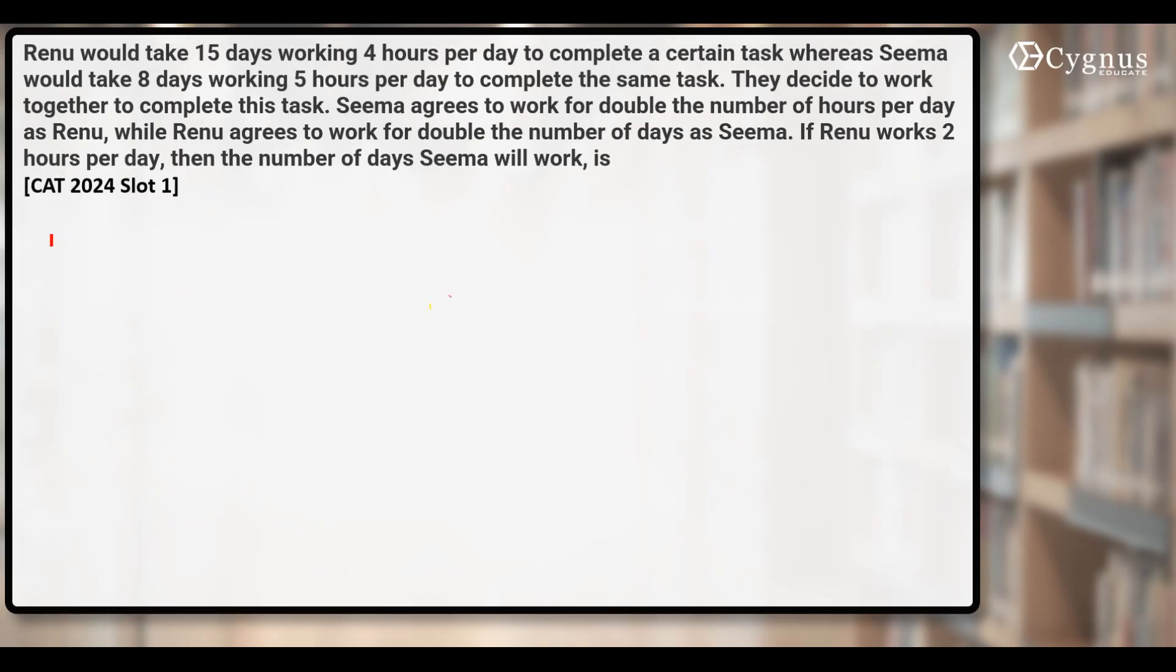Let's try to convert the whole work in terms of hours. Renu can finish the whole work in 15 days working 4 hours a day, so the effective working hours of Renu will become 60 hours. Similarly, Seema can finish the same work in 8 days working 5 hours per day, so that makes 40 hours.